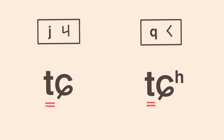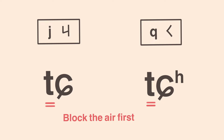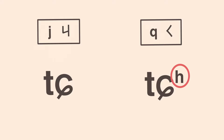The final one is 'q' (鸡). This one is pretty similar to 'j', so in order to tell the difference between them, let's look at their IPA first. They both have the same symbols, meaning their tongue positions are exactly the same, and you have to block the air first. The only difference is that 'q' has an extra small symbol H, which means when you pronounce this sound, you need to exhale more strongly. Everything else is just the same as 'j'. Let's practice: 'q', 'q', 'q'.